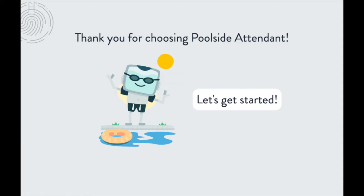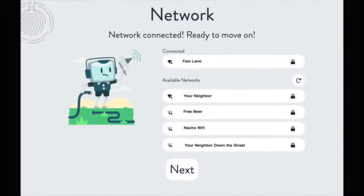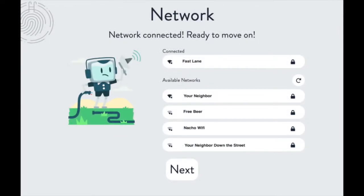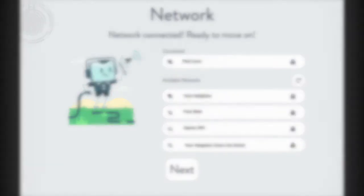Tap the button to move to the next step. Before we can configure the system, we need to make sure we have an internet connection to The Attendant. On this screen, you can configure your Wi-Fi or wired connection. Once you are connected, tap the Next button.